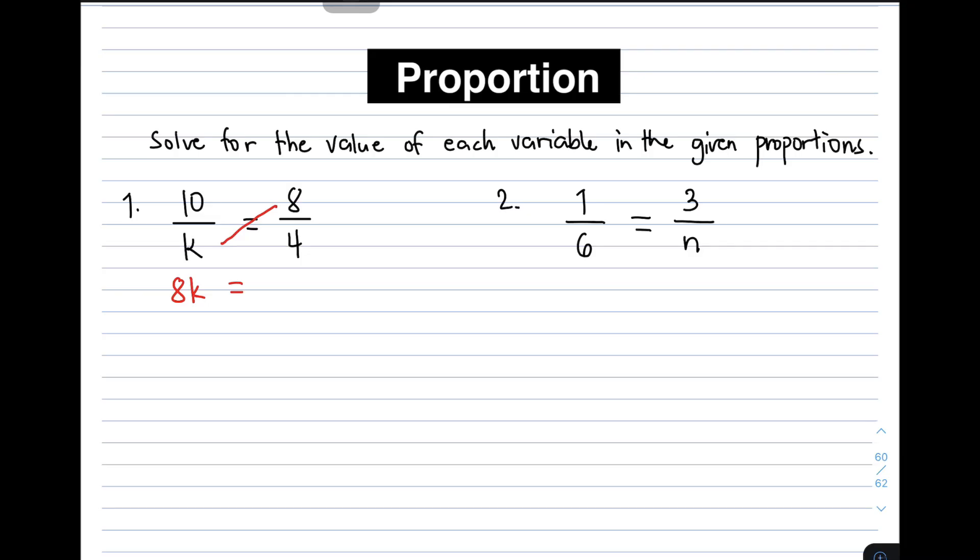Then after that, you need to multiply 10 and 4. As you can see, we've formed letter x. That is what you call cross multiplication. And then multiplying 10 and 4, that will give you 40.